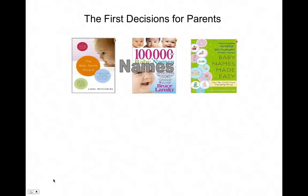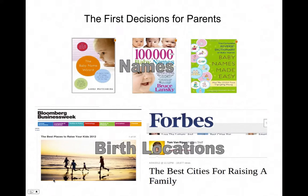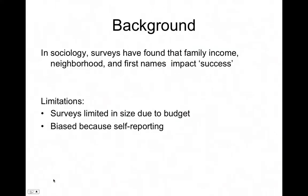Choosing a baby name is one of the first decisions for a parent, and there are plenty of books out there about how to choose baby names. Another thing that parents are often faced with is where to raise your child. You can see articles about the best places to raise your family. There's a lot of interest in sociology and psychology to find what impacts the success of a child, and if you know what these sociological factors are, maybe you could promote them and encourage children to make more of an impact on society.